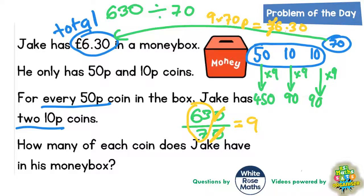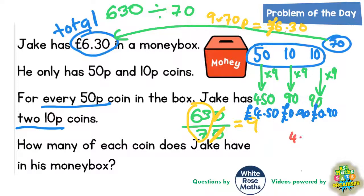Because these values are in pence, we can convert them to pounds. 450 pence is £4.50. 90 pence is £0.90, and the other 90 pence is also £0.90. We'll just double check that this actually adds up to £6.30 before we go further: £4.50, 90 pence, and 90 pence.